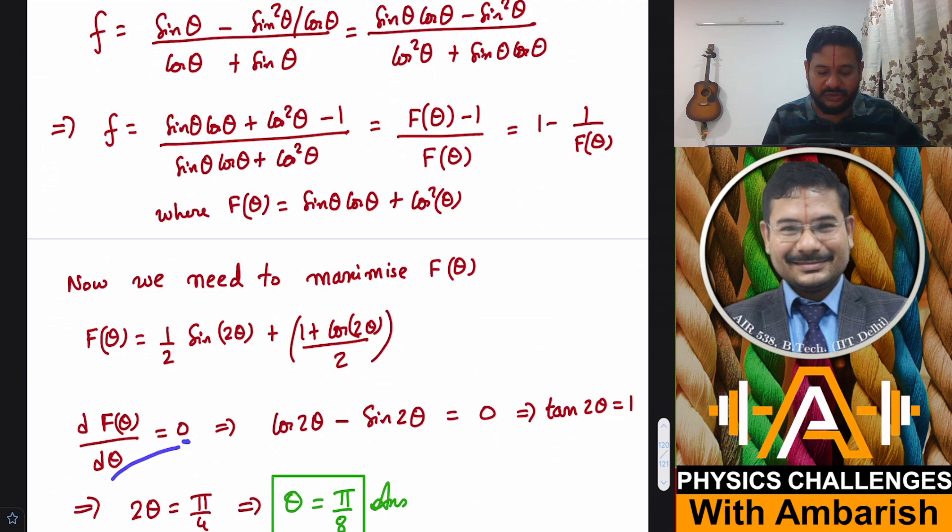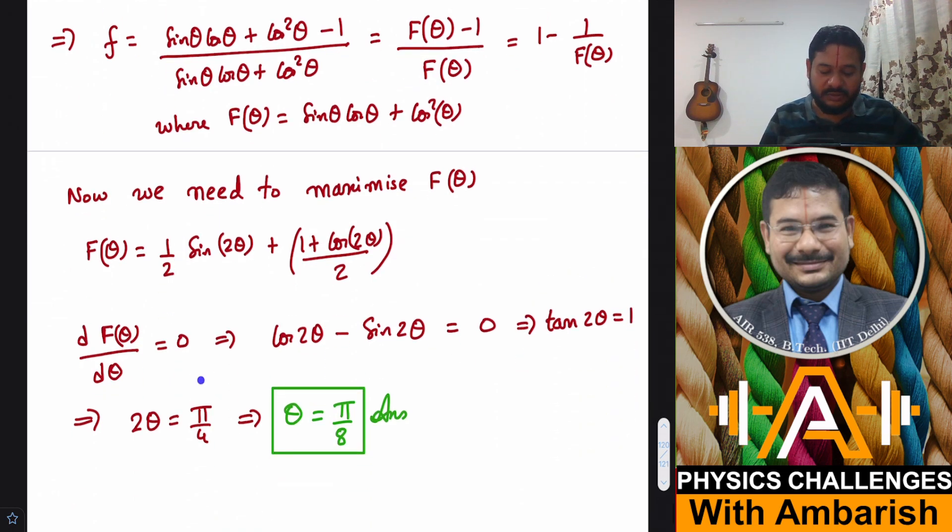This is equal to 0. So tan 2 theta is 1, or we can say 2 theta must be pi by 4, or theta must be pi by 8. So this is our final answer. If you have theta equal to pi by 8, then f you can directly get from here.